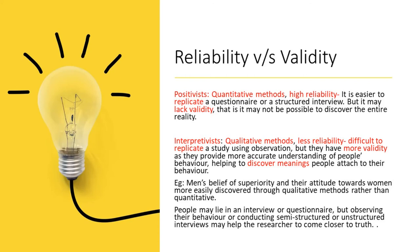For example, men's beliefs of superiority and their attitudes towards women are more easily discovered through a qualitative method rather than quantitative methods, because people may lie in an interview or questionnaire, but observing their behaviour or conducting semi-structured or unstructured interviews may help the researcher to come closer to truth. Therefore, when you look at the concept of reliability and validity, also try to understand it from the point of view of the positivist and interpretivist.